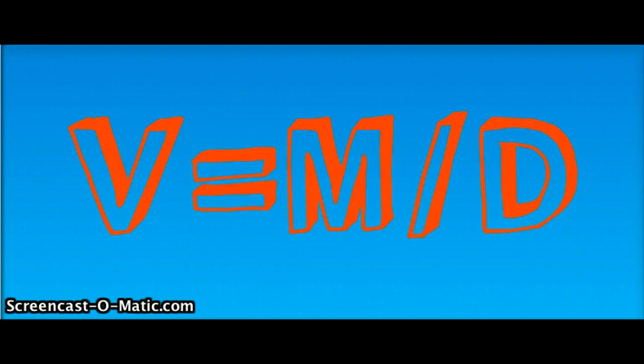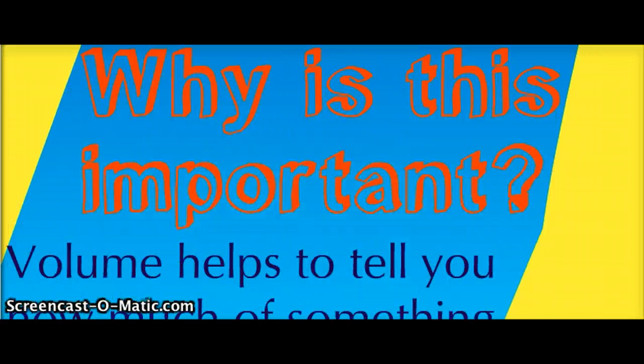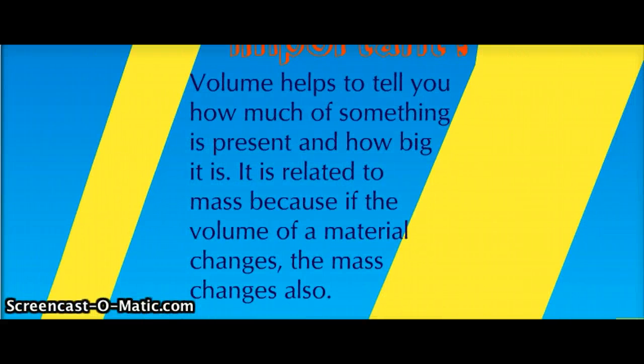Volume can be written as mass divided by density. Volume is important because it helps to tell you how much of something is present and how big it is. It is related to mass because if the volume of a material changes, the mass changes as well.